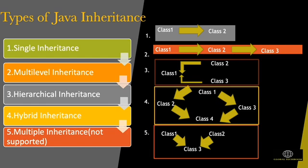Hierarchical inheritance is when one class is inherited by many subclasses. Hybrid inheritance is a combination of single and multiple inheritance. Multiple inheritance refers to the concept of one class extending more than one base class. Both hybrid inheritance and multiple inheritance are implemented using interfaces.